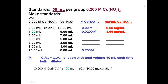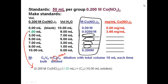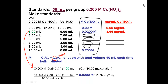For the one-milliliter sample: 0.2 M times 1 mL equals the diluted concentration times 10 mL. Divide through by ten and you get 0.02 M cobalt nitrate — as already shown in the table. The milliliter units cancel, leaving molarity. For the three-milliliter sample, it's the same calculation but with 3 mL instead of 1 mL, still a total of ten milliliters. Do the same for 5, 7, and 9 mL.